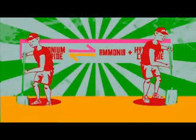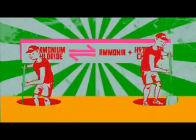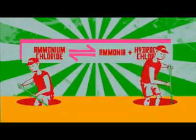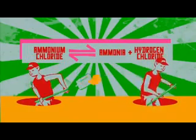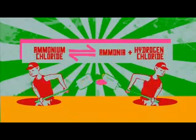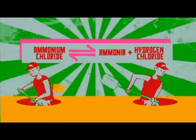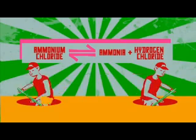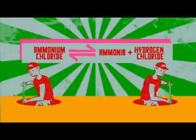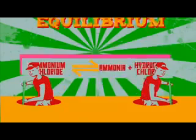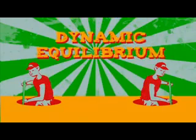The speed of the two reactions will eventually balance out, and so a reversible reaction will reach a steady state where both reactions are happening, but the overall amounts of each chemical are not changing. This state has the exciting name of dynamic equilibrium.